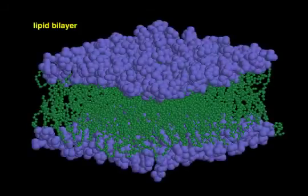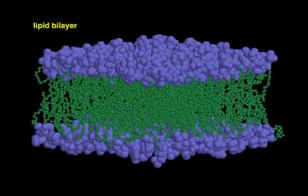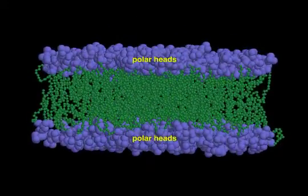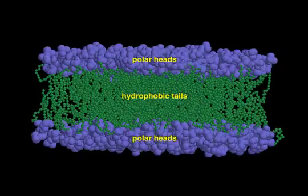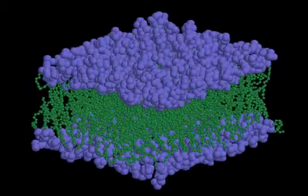In a lipid bilayer, lipids arrange themselves so that their polar head groups are exposed to water and their hydrophobic tails are sandwiched in the middle.